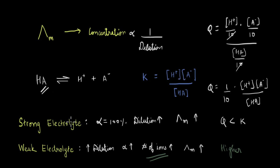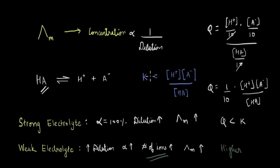This will not happen with a strong electrolyte because a strong electrolyte is already completely dissociated. But in the case of a weak electrolyte, which does not dissociate fully, on dilution the dissociation increases. When the dissociation increases, the number of ions also increases. We know that in molar conductivity it is the ions that are actually conducting electricity in the solution. So because there are more ions, the molar conductivity increases much more than in the case of a strong electrolyte — the increase in molar conductivity is much higher for a weak electrolyte.